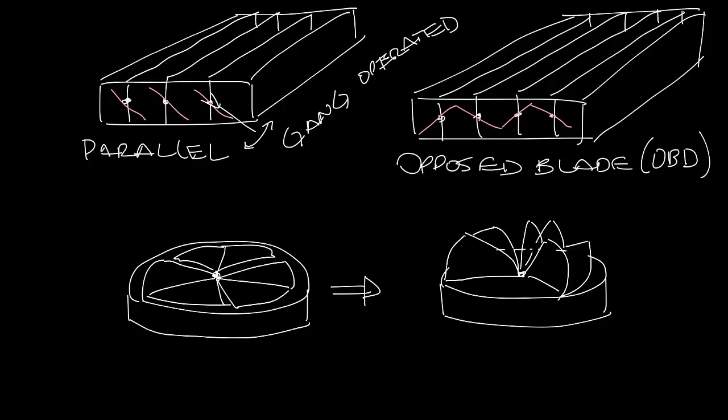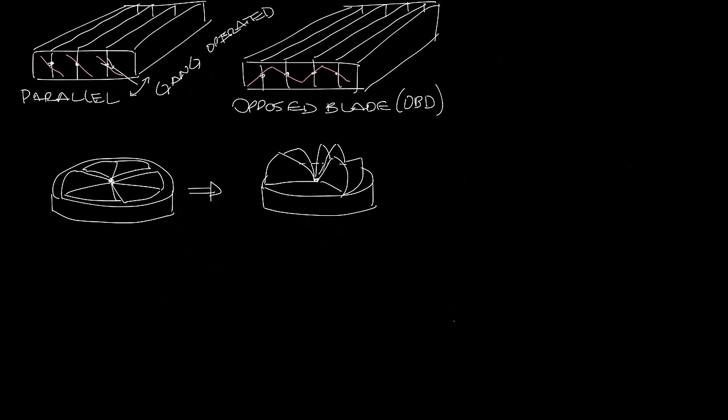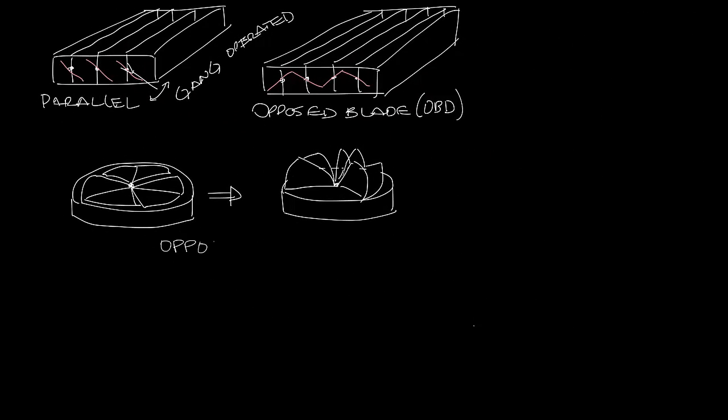The damper operator on the round damper is a slot in the center so they can be adjusted with a screwdriver from the room or even through the face of the diffuser like in our TMS diffuser. Let me make a little more room. So these are opposed blade dampers and this is the open position over here.